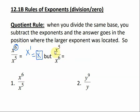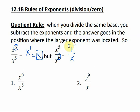Here we have the same numbers, a five and a six, so we know when we subtract we get a one. The only difference is my bigger exponent is in the denominator, so my x has to be in the denominator. And the way to show that it's in the denominator is to put a one over it. So this would be my answer for this expression.